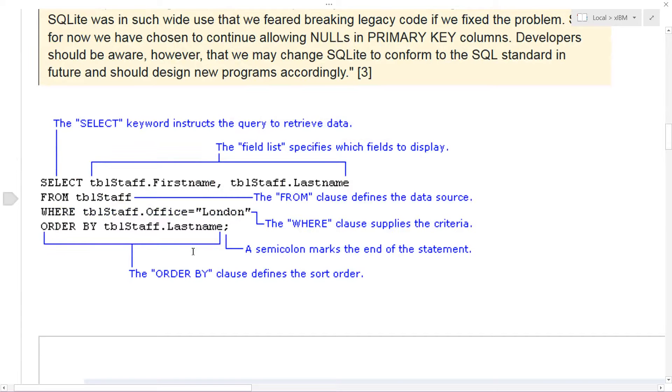We need some basic vocabulary to review. This is a good review. SELECT is what's called a keyword and instructs the query to retrieve the data, of course. This is the list of fields. So it specifies which fields to display. And here we're talking about the name of the table, and then the dot is the field or column. It's the same thing. The FROM is a clause. So we have a SELECT keyword, but a FROM clause, which defines the data source. And then you have the WHERE clause, which supplies the criteria. And the semicolon marks the end of the statement.